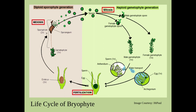The sperm is haploid, the egg is haploid, and when both fertilize, they form a diploid zygote which eventually gives rise to the embryo. From the embryo, the sporophyte develops, but the sporophyte is dependent upon the gametophyte partially or fully. This is the salient feature of alternation of generation in bryophytes.